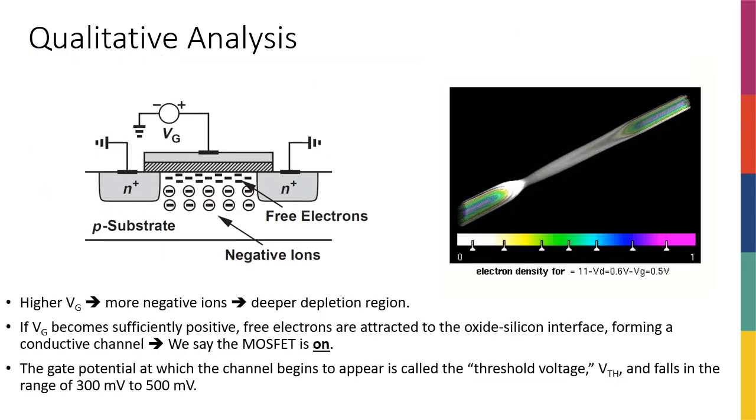Okay, so what happens if I increase this VG? Well, as I increase the VG, you can imagine that I'm basically repelling more and more free holes from the area right under the oxide or right under the gate, and I'm going to have a deeper and deeper depletion region.